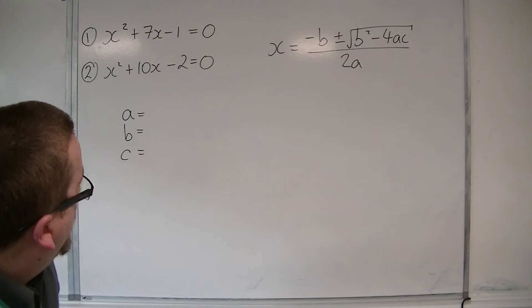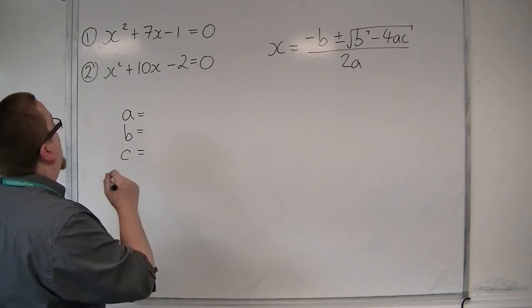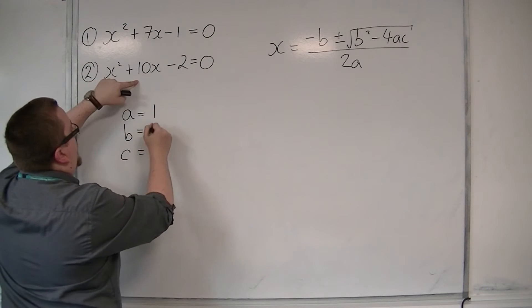So for the second, we're going to do exactly the same process. We're going to identify a, b, and c. So a is 1, b is 10, c is minus 2.